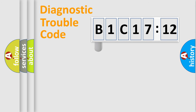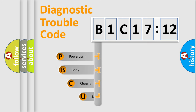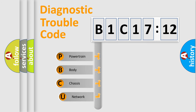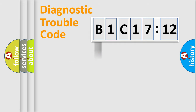First, let's look at the history of diagnostic fault code composition according to the OBD2 protocol, which is unified for all automakers since 2000. We divide the electric system of automobile into the four basic units: Powertrain, Body, Chassis, Network.